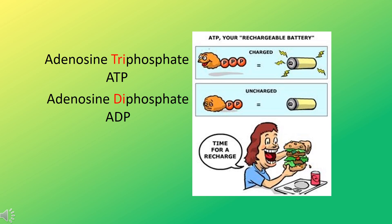When ATP is broken down, the third phosphate is removed from the molecule's tail. When this happens, energy is released and the cell can use this energy to carry out different functions. Now that the molecule only has two phosphate groups remaining, it's called an adenosine diphosphate, or ADP — di meaning 2.